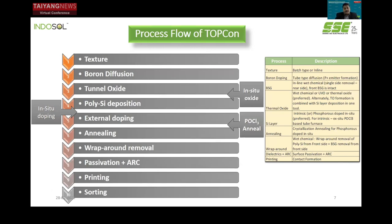With respect to the process flow of TopCon, there are various TopCon routes followed by different companies and research institutes. What you see here is a very generic process flow. The majority of steps different from PERC are: boron diffusion using BCl3 as a source dopant, tunnel oxide deposition of silicon oxide which can be done in situ or ex situ depending on the method, and then the actual polysilicon deposition where both in situ and ex situ doping options are possible. In the coming slides I will go in detail about the tunnel oxide deposition and polysilicon deposition to understand how TopCon differs from PERC.